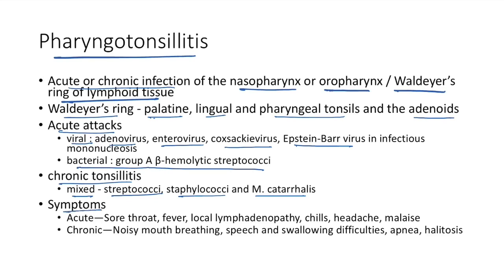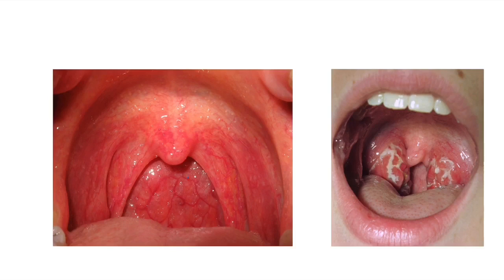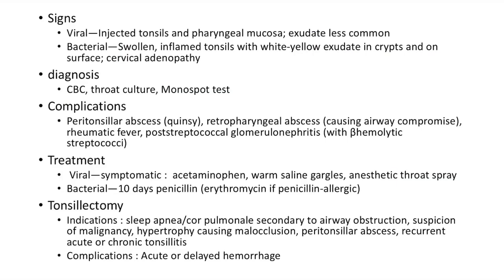Symptoms of pharyngotonsillitis: acute cases present with sore throat, fever, local lymphadenopathy, chills, headache, and malaise. Chronic cases present with noisy mouth breathing, speech and swallowing difficulties, apnea, and halitosis. Viral pharyngotonsillitis presents with injected tonsils and pharyngeal mucosa; exudate is less common. Bacterial cause: swollen inflamed tonsils with white-yellow exudate in crypts and on surface, with cervical lymphadenopathy.